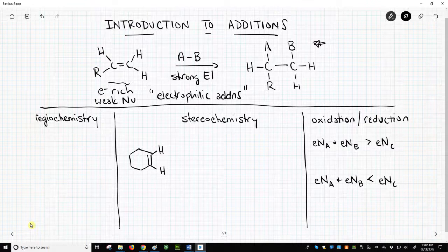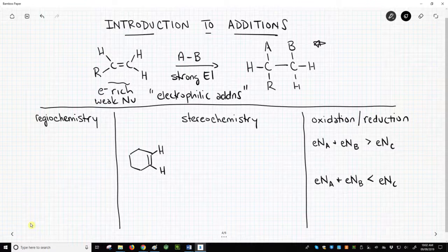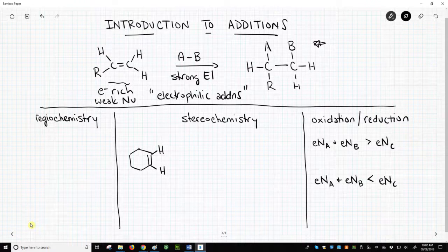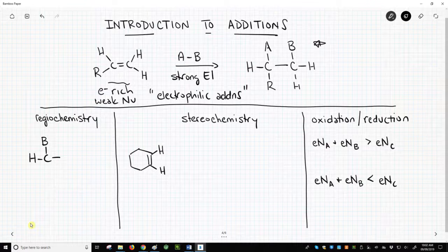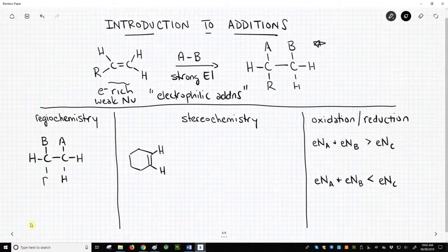There are three factors we will focus upon for each addition we encounter: regiochemistry, stereochemistry, and oxidation-reduction. For regiochemistry, when we look at our addition at the top of the screen, we could have drawn two addition products. We've already shown one. Here is a second possible addition product. We are changing the positions of the A and B atoms. So here's our second addition product.